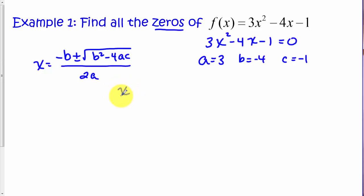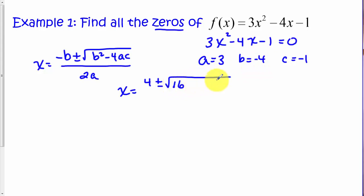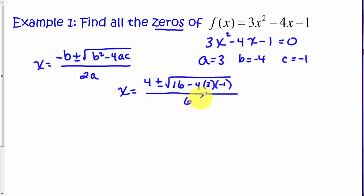Let's substitute into our formula. Negative b would be negative of negative 4, which is positive 4, plus or minus. Now we've got to square b: negative 4 squared is positive 16, since negative 4 times negative 4 is positive 16. If you're using a calculator, make sure you put negative 4 in parentheses. Then minus 4 times a, which is 3, times c, which is negative 1. All over 2 times a, which is 2 times 3, or 6. Under the square root we're multiplying a negative times a negative, so this becomes positive 12, giving us the square root of 28.